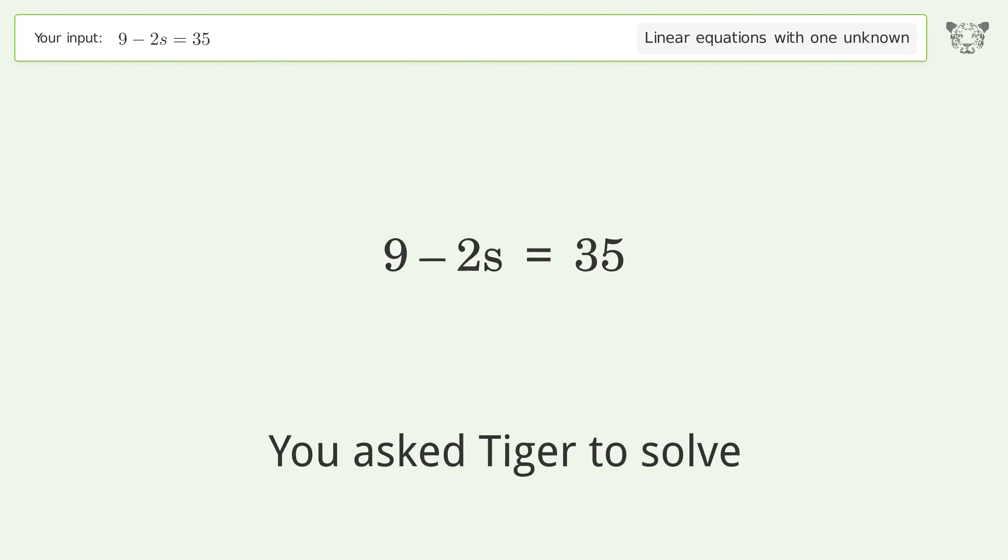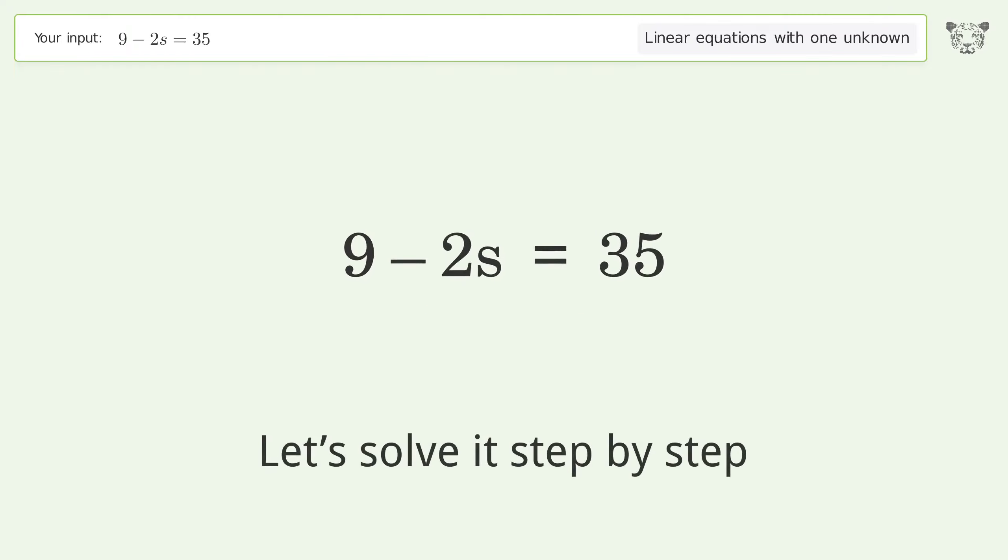You asked Tiger to solve this. This deals with linear equations with one unknown. The final result is s equals negative 13. Let's solve it step by step.